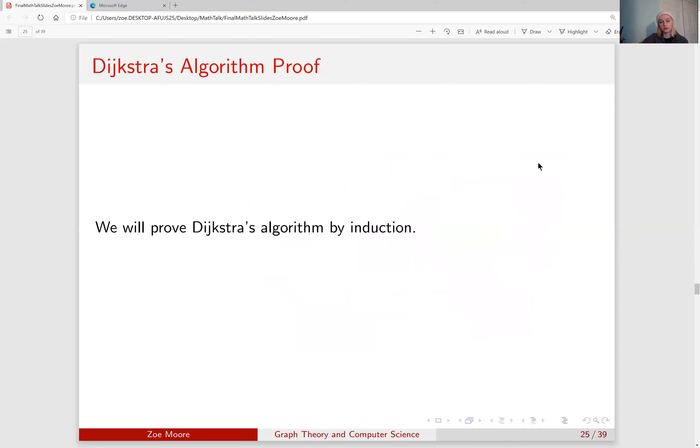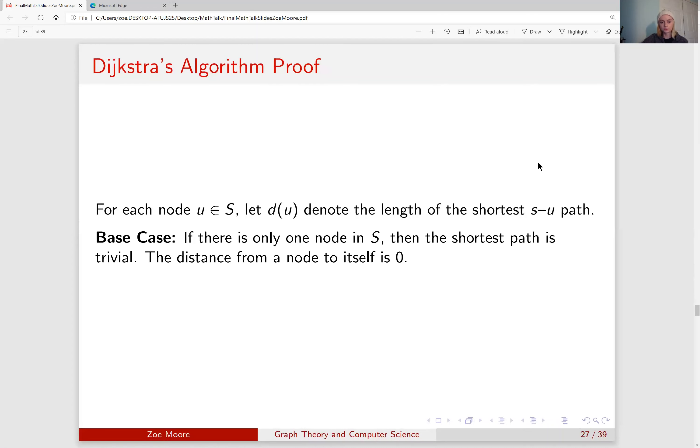Now that we've gone through this example, we will prove Dijkstra's algorithm by induction. To start out, for each node U in our set S, we will let D(U) denote the length of the shortest S to U path where S is the starting node. Our base case is that if there is one node in S, then the shortest path is trivial because the distance from a node to itself, as we mentioned earlier, is 0.